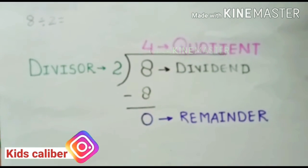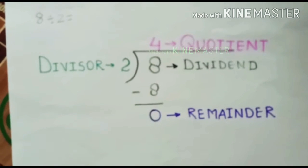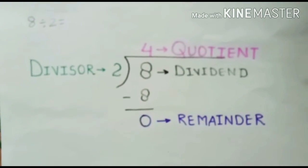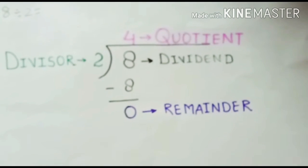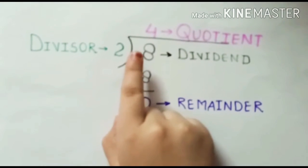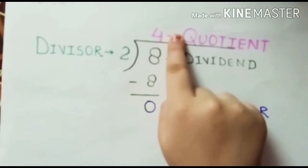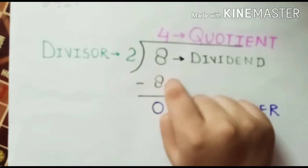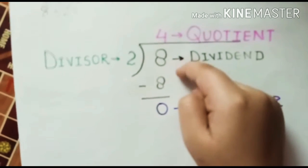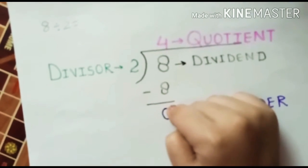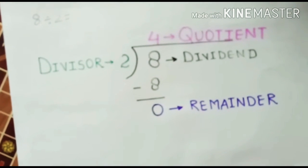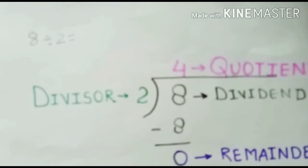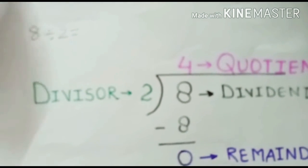For example, the question is 8 divided by 2. So, 8 is the dividend and 2 is the divisor. In 2's table, 8 comes 4 times. So I will write 4 here as a quotient and I will write 8 below the dividend. If we minus these, the answer will come 0. So, 0 is the remainder. The answer of this question is 8 divided by 2 is equal to 4.